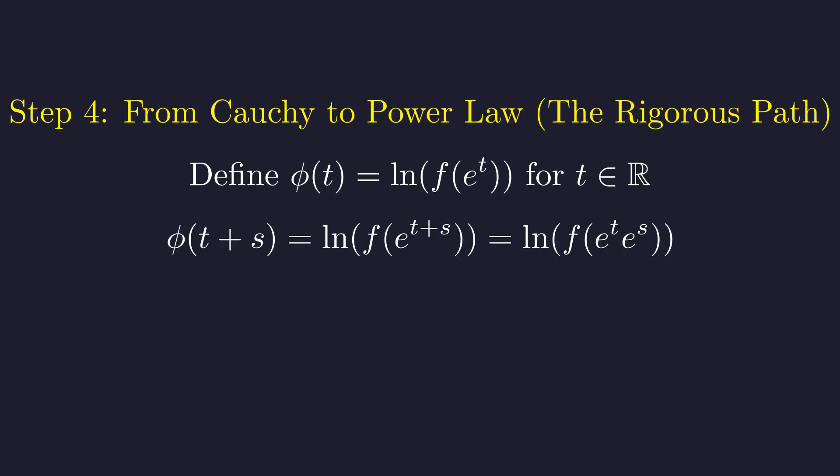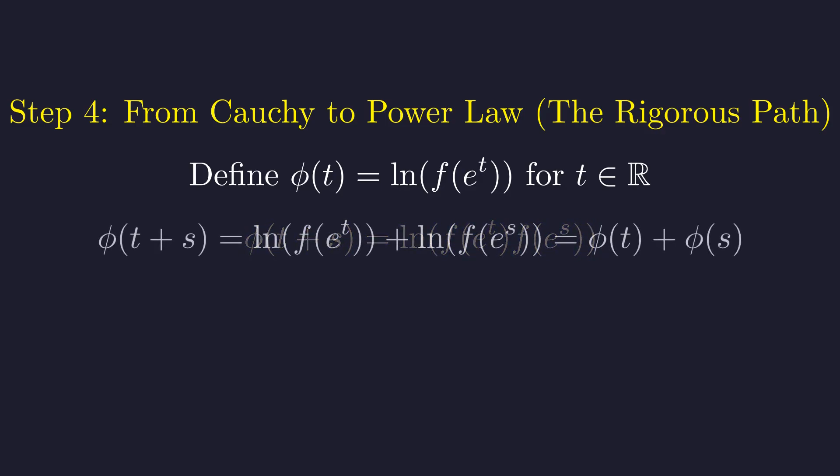Let's examine phi of t plus s. Using exponent rules, this becomes the log of f of e to the t times e to the s. Because f is multiplicative, we can split this into the log of f of e to the t times f of e to the s. And by the properties of logarithms, this separates into a sum. So phi of t plus s equals phi of t plus phi of s. This is the additive Cauchy equation.